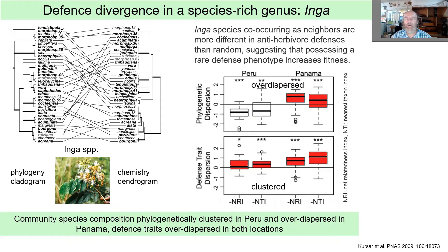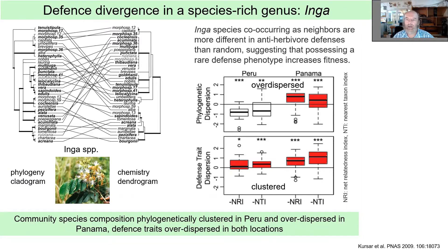We can look at community composition to see whether it is drawn randomly from the phylogeny, phylogenetically clustered (related species more likely to co-occur), or over-dispersed (related species less likely to co-occur). Two locations, Peru and Panama, give significant but very different results — Peru is clustered while Panama is over-dispersed. However, when looking at defence trait dispersion, both sites show over-dispersion, indicating plants are more chemically different from co-occurring species than expected by chance.